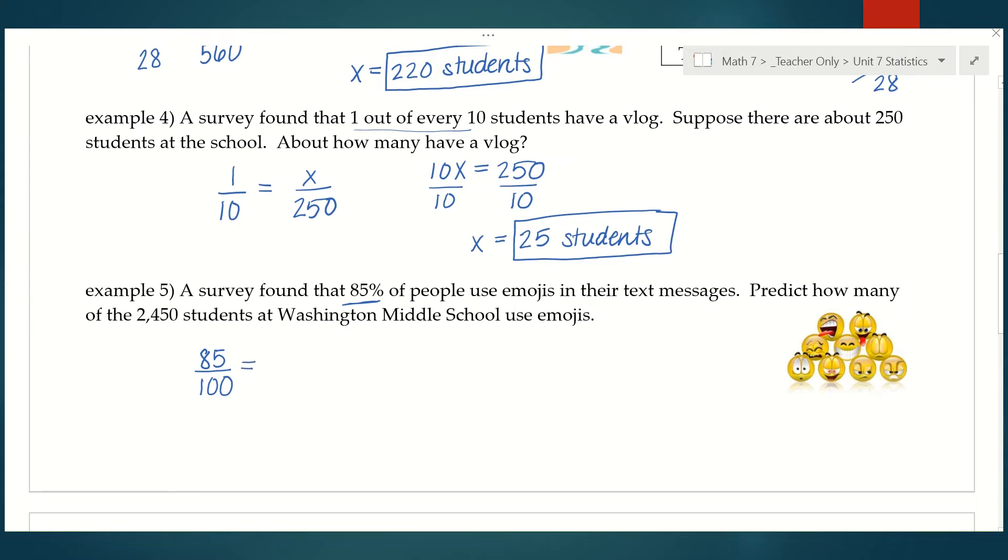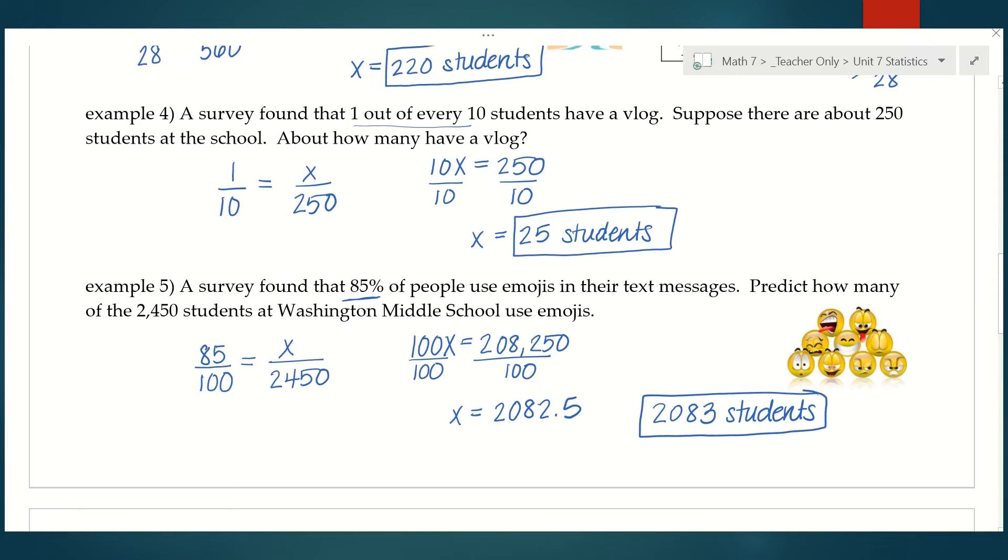On the other side of our proportion, I want to know how many out of 2,450 students would that be. So 100x, 85 times 2,450. I'm getting 208,250 divided by 100, moves our decimal over two places. And so again, I can't have half a person, so I'm going to round that up.